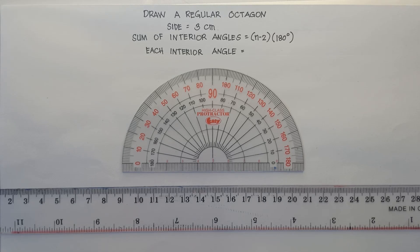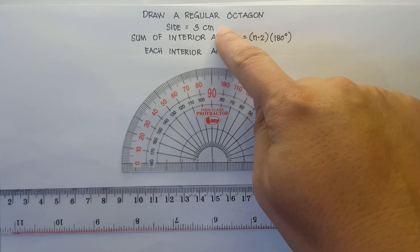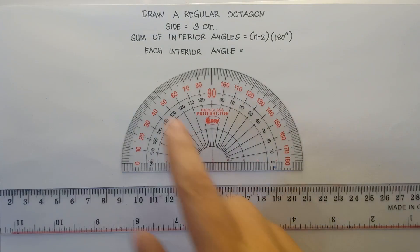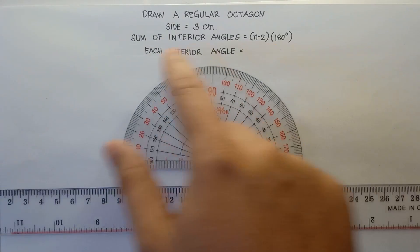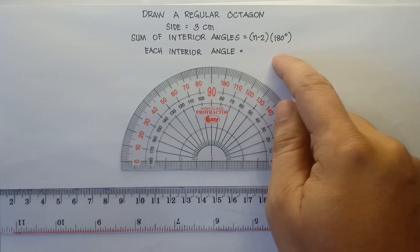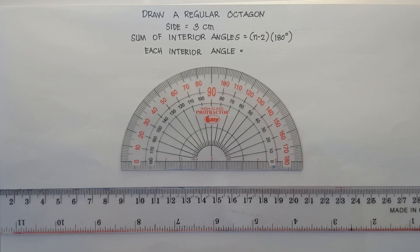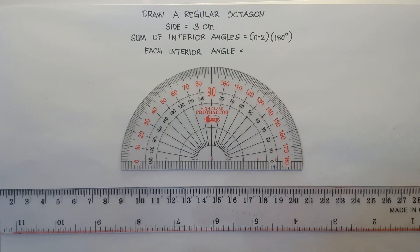Now if we talk about a regular octagon, it has 8 equal sides and 8 interior angles that must be congruent. We have a given side of 3 cm but we don't have the measure of each interior angle. We can find it using the sum of interior angles formula. There are cases where the teacher will provide the measure of each interior angle, but if it's not given, you need to find it yourself.